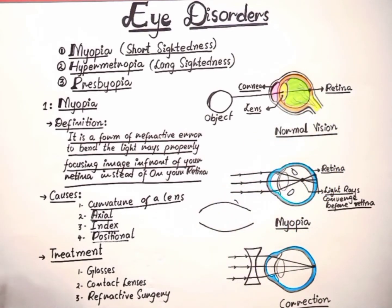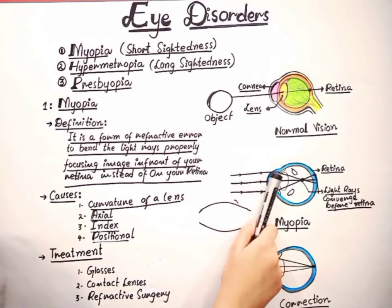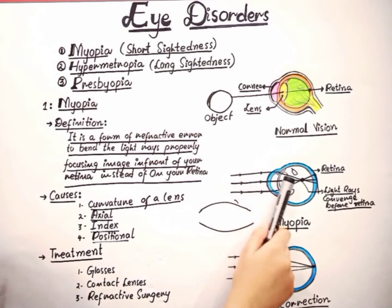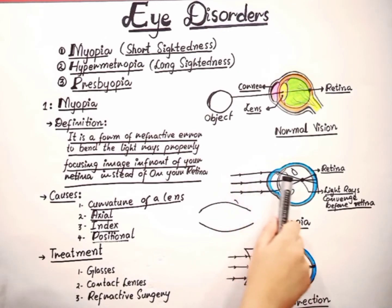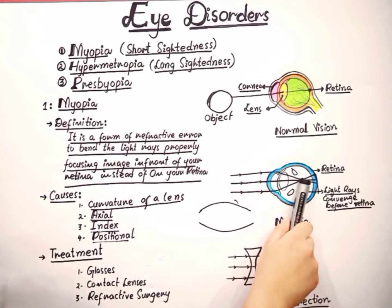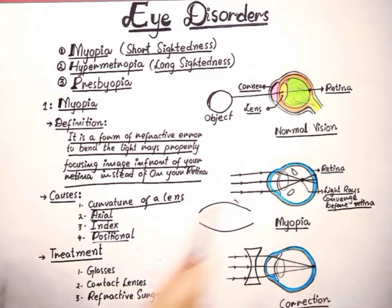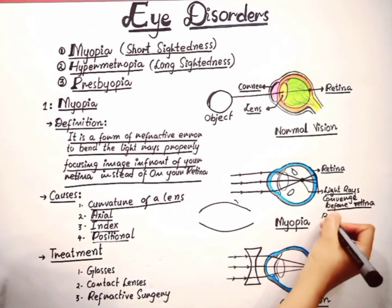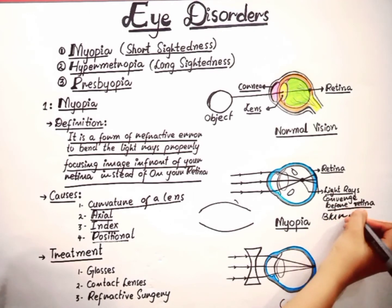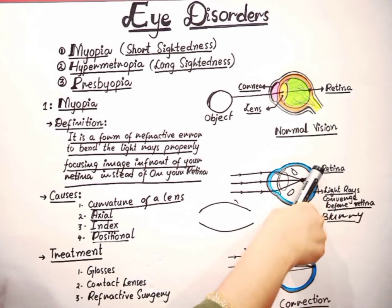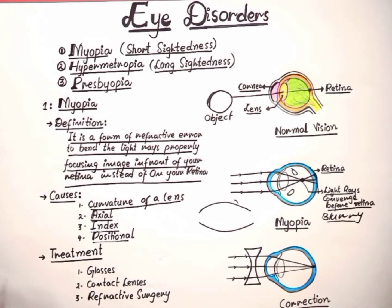This is the normal process of vision. But in myopia, the light rays enter into the cornea and then into the lens, but they converge and form an image in front of the retina instead of on the retina. So the rods and cones — the photoreceptors — cannot send clear signals to the brain, and the image will be blurry.